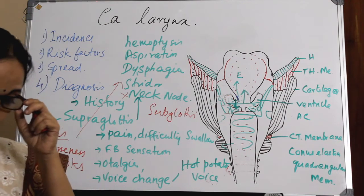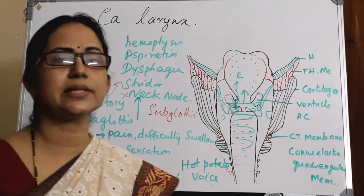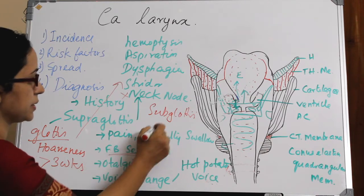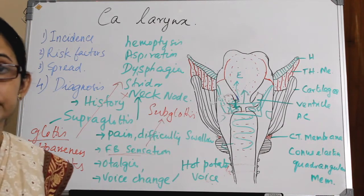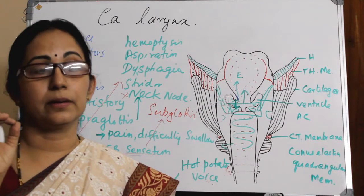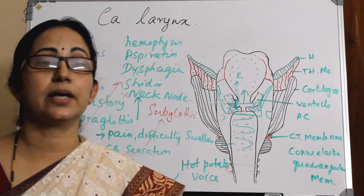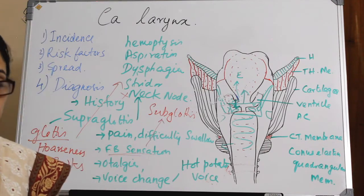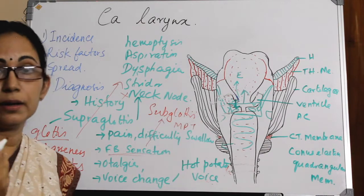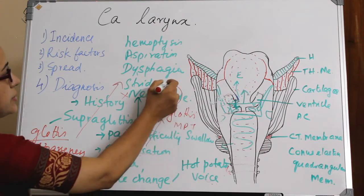Subglottic lesions are similar to supraglottic in that they produce very vague symptoms in the early stages. The commonest early presentation is a foreign body sensation. In advanced cases, the most important symptom is a rapidly reduced maximum phonation time and very rapid vocal fatigue. Later, it will progress to stridor.